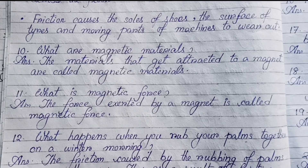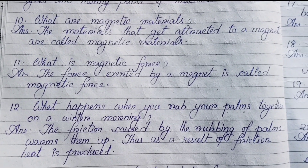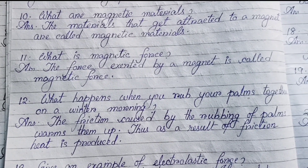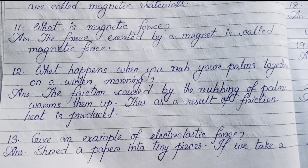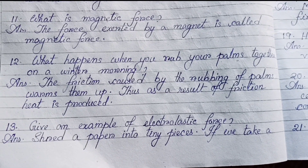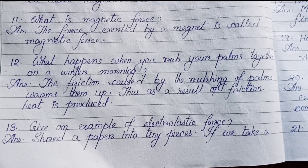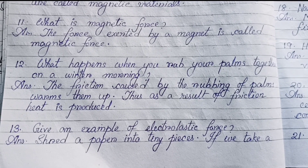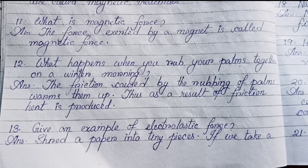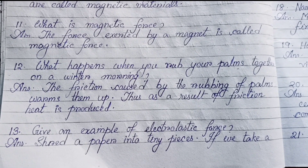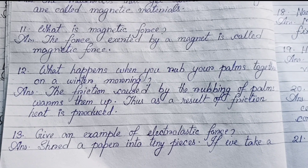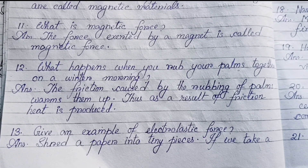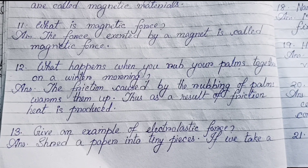Number ten: What are magnetic materials? The materials that get attracted to a magnet are called magnetic materials. Number eleven: What is magnetic force? The force exerted by a magnet is called magnetic force. Number twelve: What happens when you rub your palms together? When you rub your palms together on a winter morning, the friction caused by rubbing warms them up. Thus, as a result of friction, heat is produced.